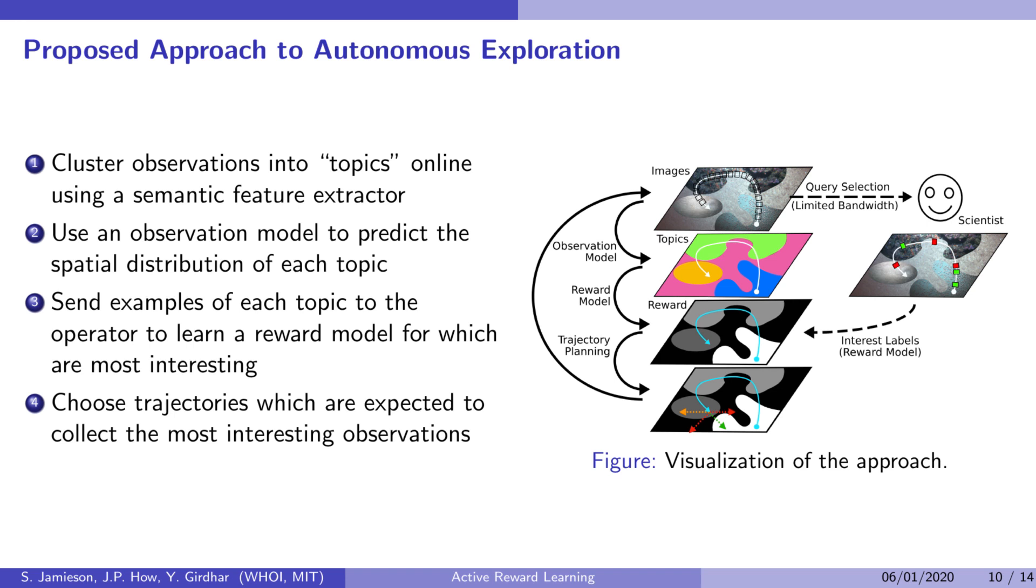By sending examples of past observations to the expert and asking which ones are interesting, the robot learns a reward model and can then adaptively plan highly interesting trajectories.